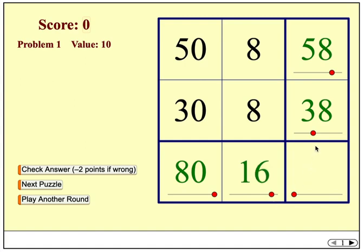We have a choice here for this one remaining square. We can add 58 and 38, and that gives us 96, or we could add 80 and 16, and that also gives us 96. And that makes for a good discussion. Why do we get the same result either way?